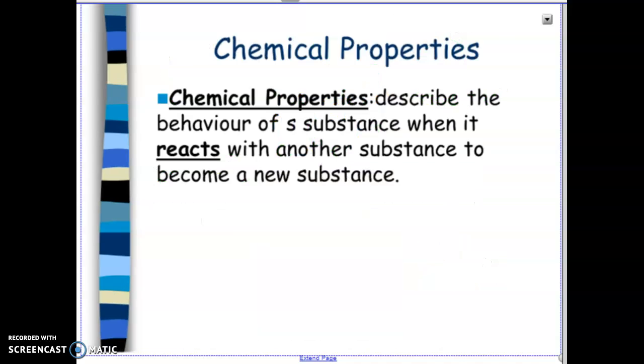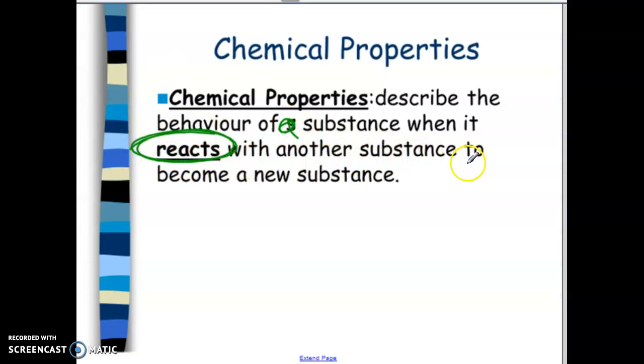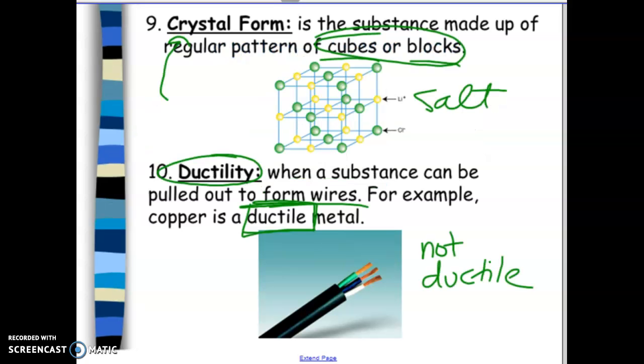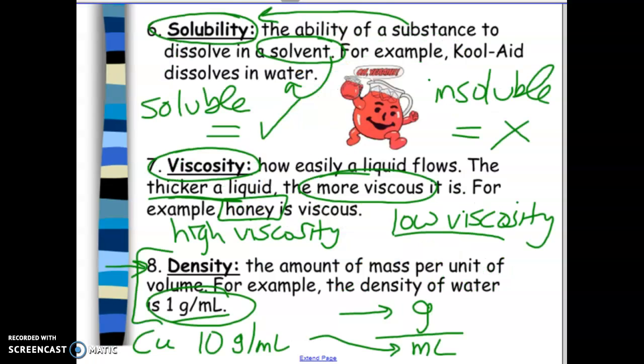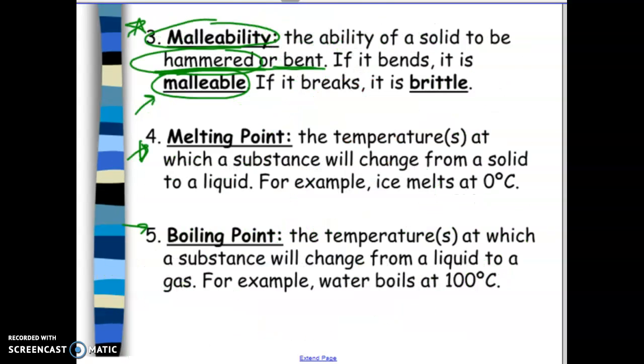So chemical properties. Chemical properties are ways to describe the behavior of a substance when it reacts with another substance to become something new. So essentially, chemical properties is describing a chemical reaction. So all these things that we talked about here, these are not chemical reactions. We're just describing how it is normally on its own.